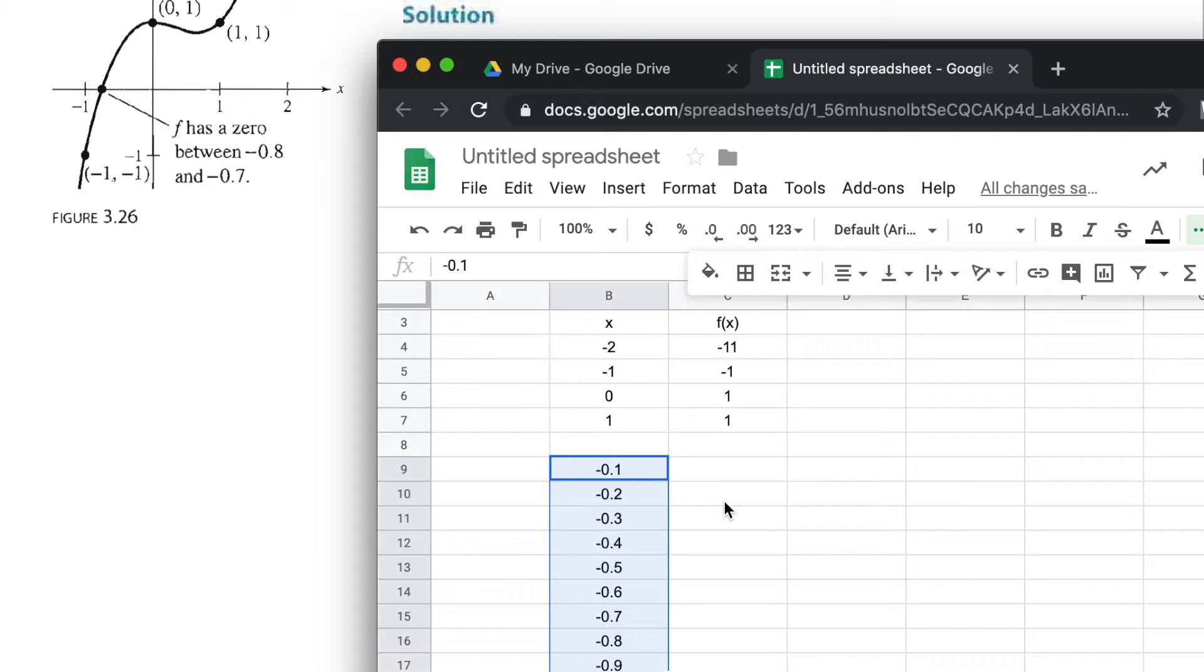Now we're going to copy the programming that we gave and apply it here. There are our values. Watch what happens from -0.1—we know we're positive because we're heading toward that positive 1.